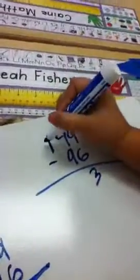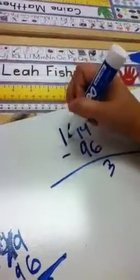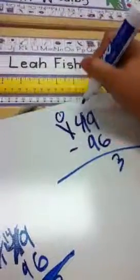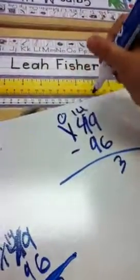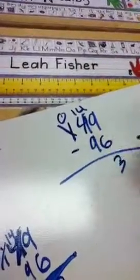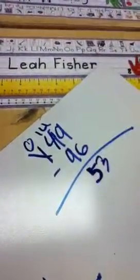So I have to go next door and get 10 from that. So that becomes a 0. That becomes a 14. So 14 minus 9 is 5. So the answer is 53.